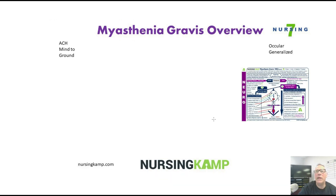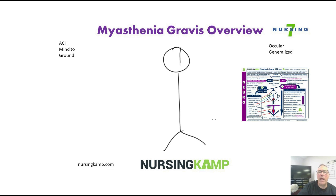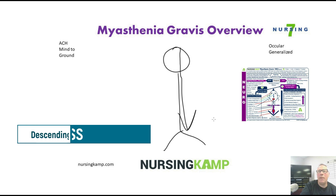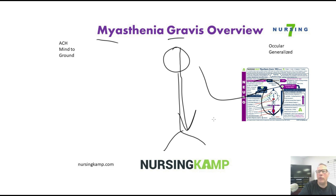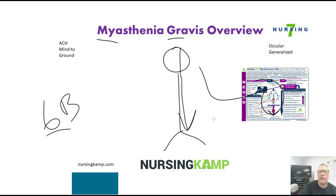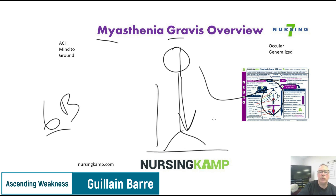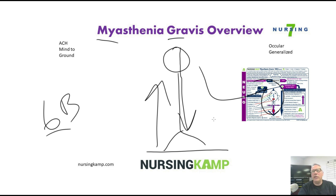When we're talking about Myasthenia Gravis, think mind to ground. Basically what that means is that when you're looking at a person, the paralysis happens from the head down to the ground. That's different than Guillain-Barré, where Guillain-Barré is from ground to brain. So what's going on with the person with Myasthenia Gravis?